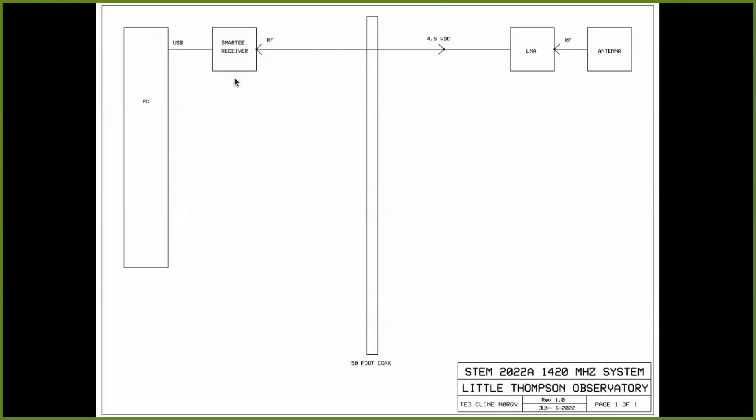This particular Smarty receiver is convenient because it sends 4.5 volts DC back up the coax to power the low noise amplifier.